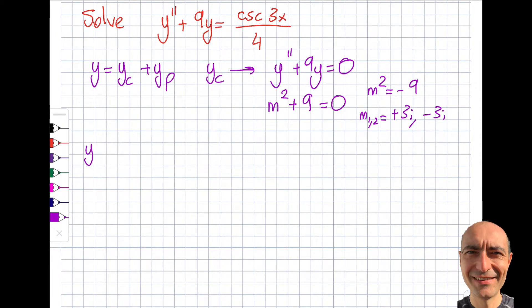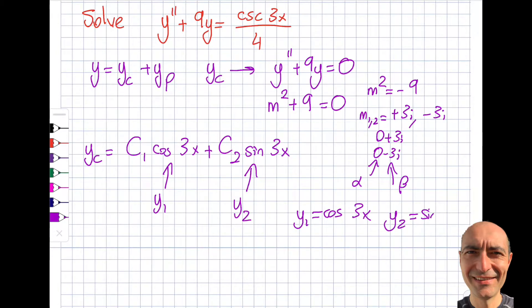So if I go ahead and write my yc in the form, it should be c1 cosine of 3x. Because remember this is 0 plus 3i, this is 0 minus 3i, this was alpha, this was beta. So e to the power of 0x, which is 1. So I'm taking shortcut now because we have been exposed to this already. c2 times sine of 3x. So what is my y1 then in here? You can see that this is going to be my y1. By the way, it doesn't matter which we call y1 or y2. So the final result will be the same because you're summing them up. So I'm going to say that y1 is equal to cosine of 3x and I'm going to say y2 is equal to sine of 3x. So far so good.